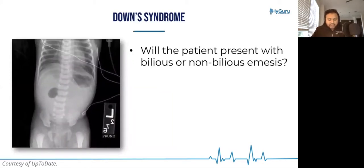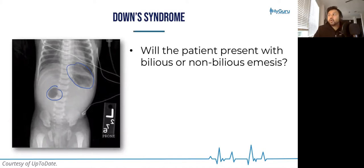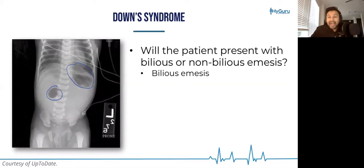Continuing with Down syndrome — here is an x-ray showing two air-filled cavities. As a flip-the-classroom moment, do you think this patient with Down syndrome is going to have bilious or non-bilious emesis? If you're saying this is duodenal atresia, you're absolutely correct.